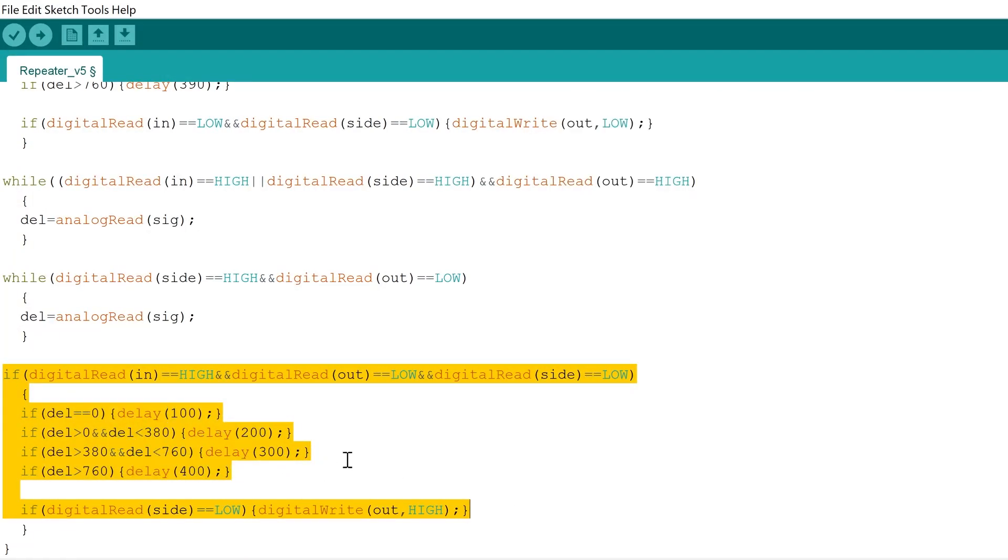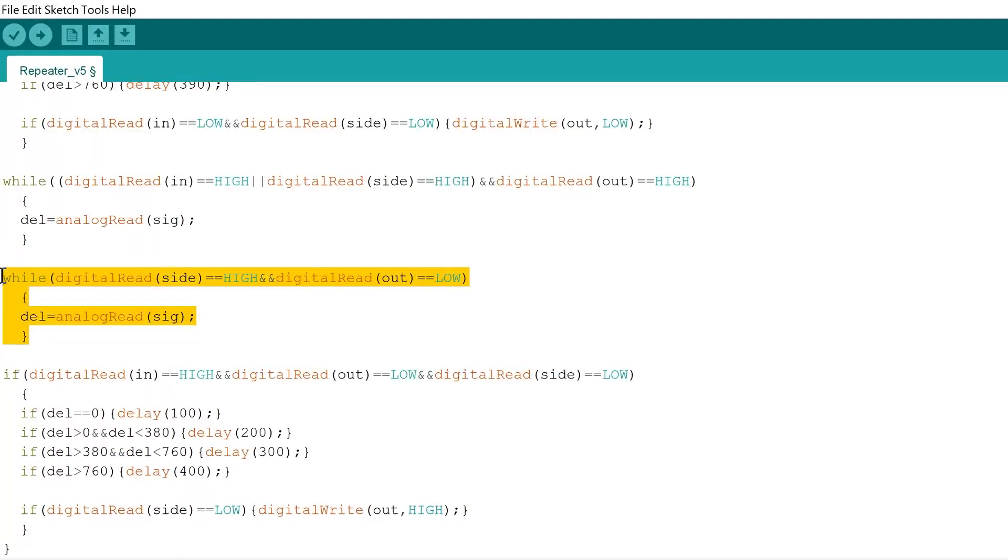This last if statement is responsible for turning on the repeater. It's saying that if the LEDs are off and it's receiving power, but also if it's not being locked from the side, it'll go through the delay depending on the signal. So we have one tick, two tick, three tick, and four tick. After that delay, if it doesn't get locked before, it'll turn on the LEDs. If it does get powered from the side and gets locked before these delays are over, it won't turn on the LEDs and it will get caught within this while statement.